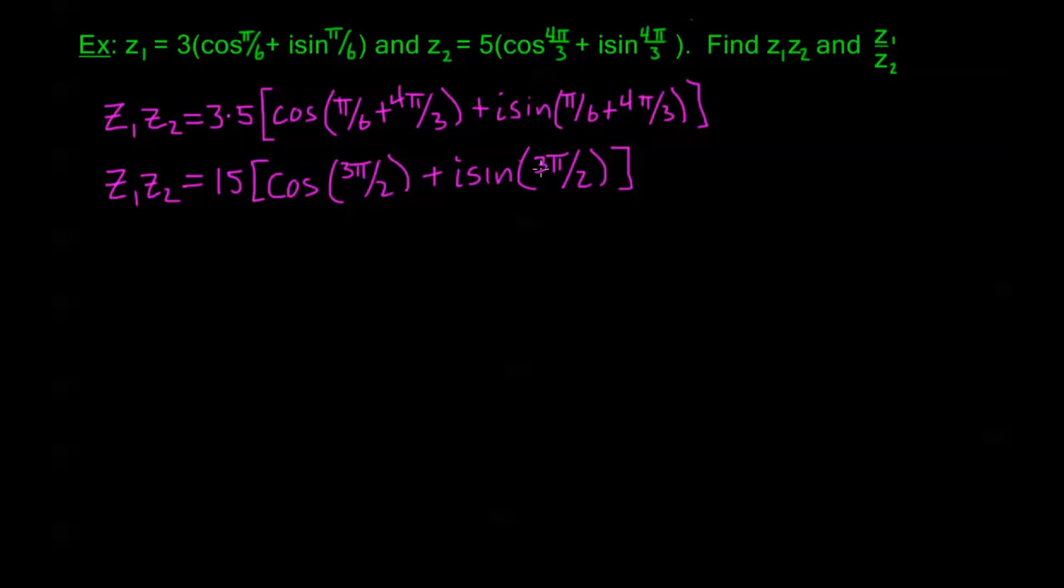We're finished already, but as an aside, if we want the answer in A + Bi form, I plug in for cos(3π/2), which is 0, and I have plus i. Now sin(3π/2) is negative 1. So we get in the form A + Bi, this is just negative 15i.